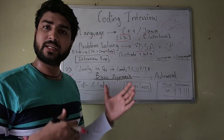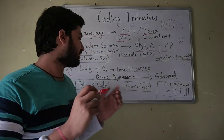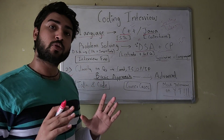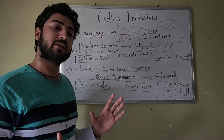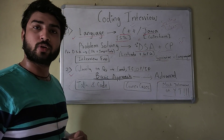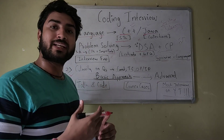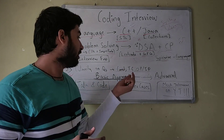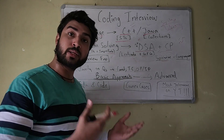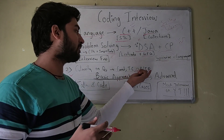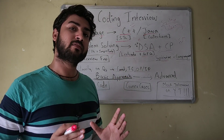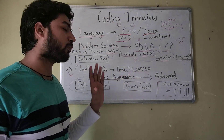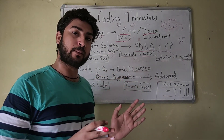The interviewer will give you a problem to solve. The first thing is to have clarity on the question. Whatever problem the interviewer gives you, have 100% clarity on it. Don't be afraid to ask what he is trying to say or what you need to do. Be clear with the constraints, the test cases — you can ask for more test cases. Be clear with what the input is and what the output should be. That should be your first step in the interview.